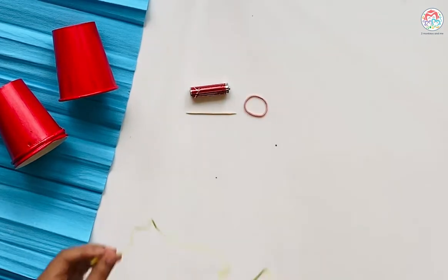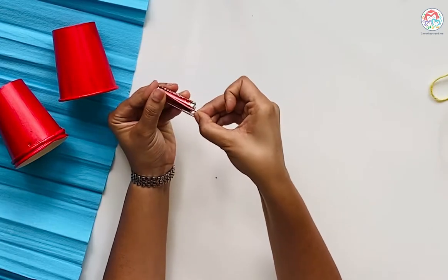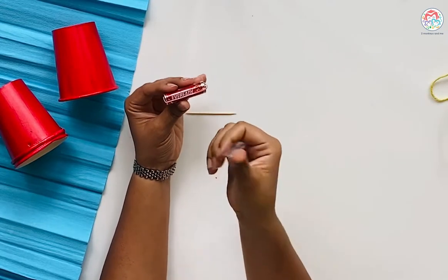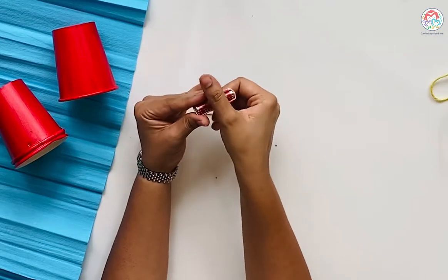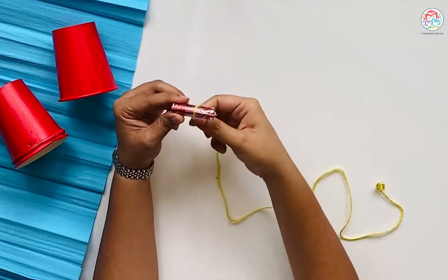Put the rubber band on the battery like this. Secure it well from the middle with tape. Take your rope and put a little tape on it, then roll your thread all around it like this.